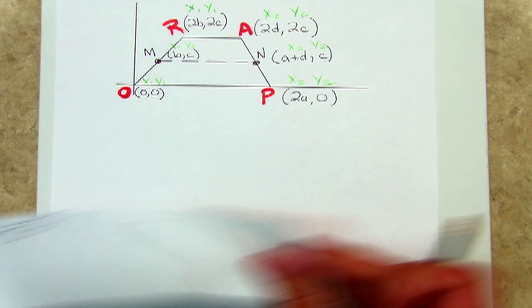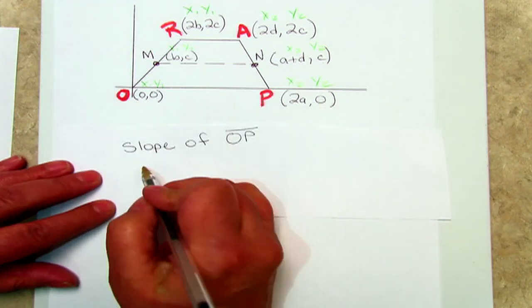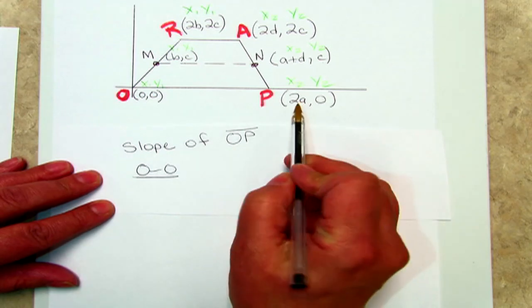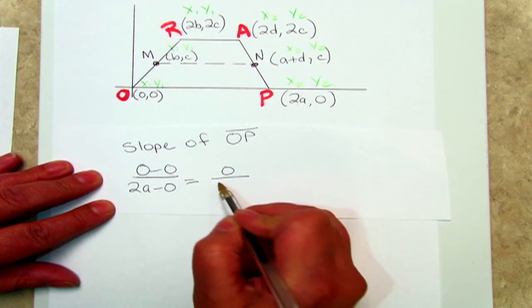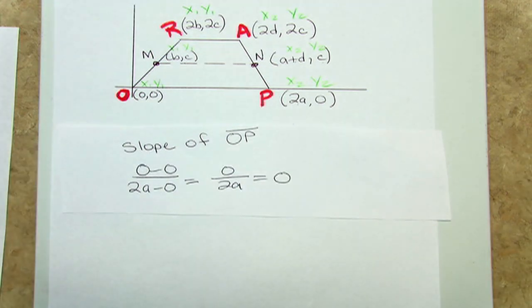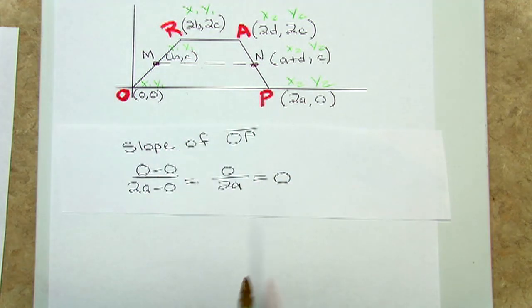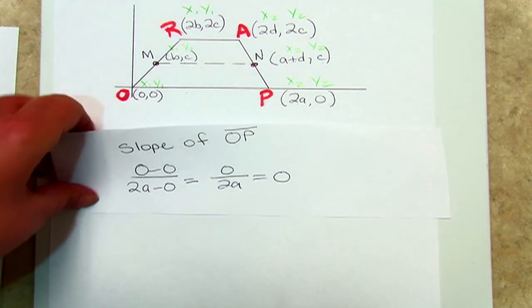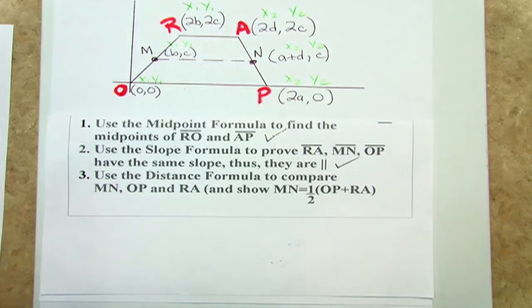Lastly, we need to find the slope of OP. y2 minus y1, x2 minus x1, 0 divided by 2a, again, is just 0. Because all three lines have a slope of 0, it proves that the mid-segment is parallel to the two bases. We have just taken care of step 2 of our trapezoid mid-segment theorem.